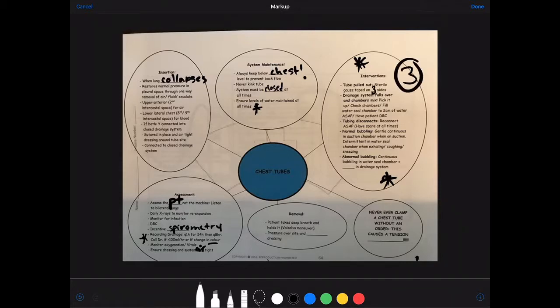Three being the magic number here. It's very important you don't tape that down on four sides because if you tape it down on four sides you can cause a tension pneumothorax. Leaving that fourth side open allows air to escape the pleural space, so it's still leaving that pleural space but it doesn't allow it to re-enter.